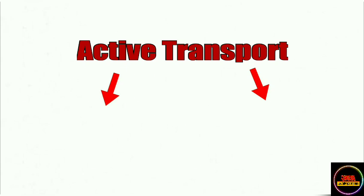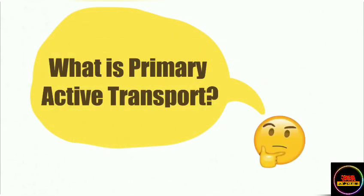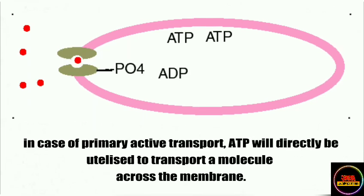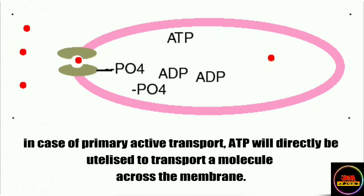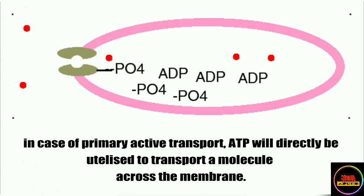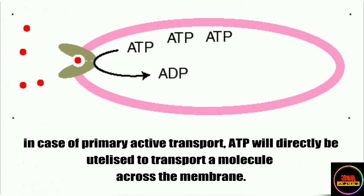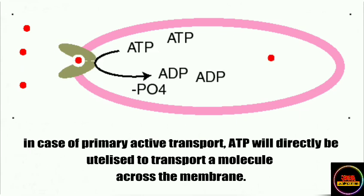Primary active transport is a process of cellular transport where direct energy in the form of ATP is required to transport molecules across a membrane against their concentration gradient. In this process, ATP is directly utilized and the energy released drives the transportation of molecules across the membrane.